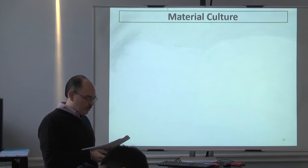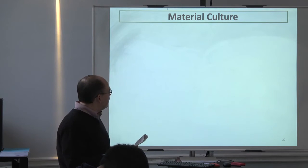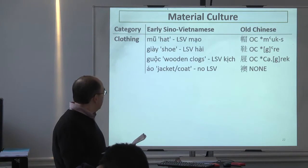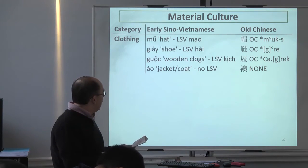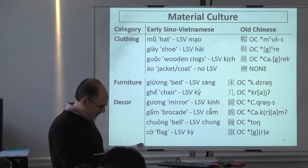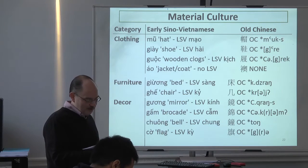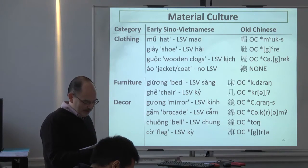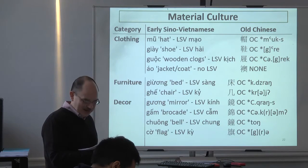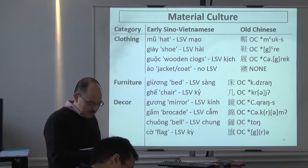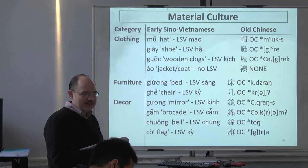A related issue is general material culture. Clothing was already mentioned as being mandated by Xi Guang, so we have those kinds of words. Home furnishings — what was common in Vietic culture prior to the Chinese arrival is less certain, but when we combine marriage, family, economy, and household, we have a fairly complete Chinese-style cultural package from this evidence.